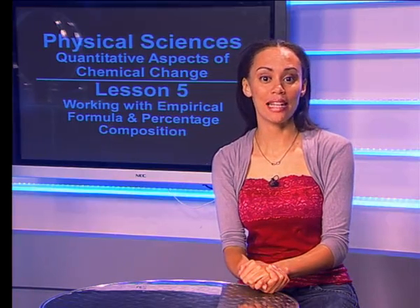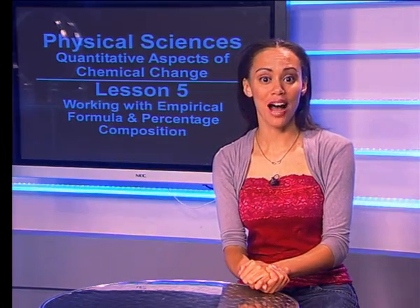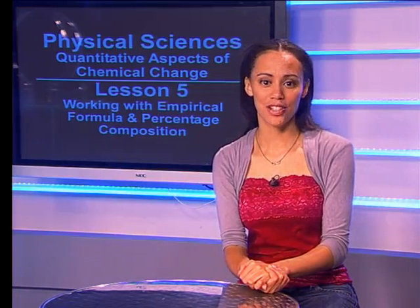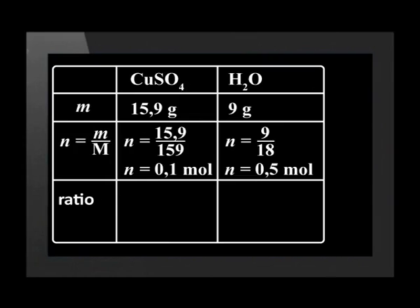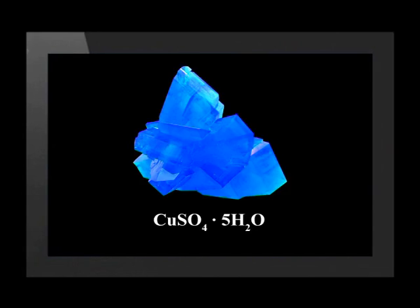The third step is to determine the mole ratio by dividing by the smallest number of moles. In this situation, the smallest number is 0.1. For copper sulfate, 0.1 divided by 0.1 is 1. And for water, 0.5 divided by 0.1 is 5. Therefore, the formula for hydrated copper(II) sulfate is CuSO4·5H2O — 5 moles of water of crystallization.